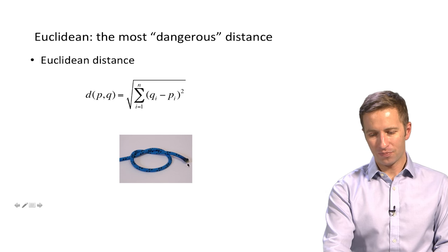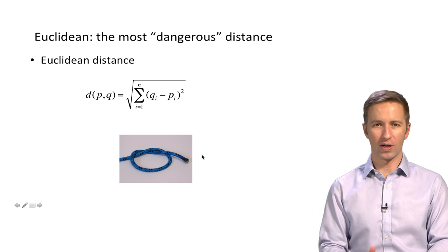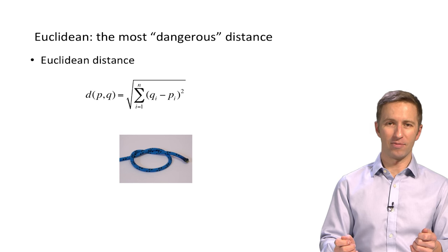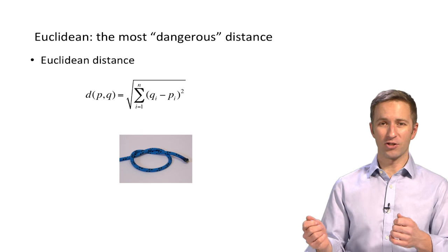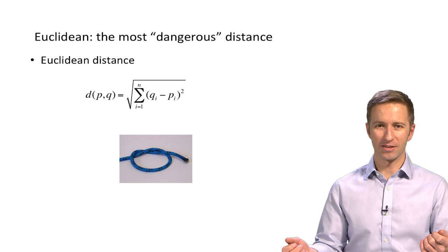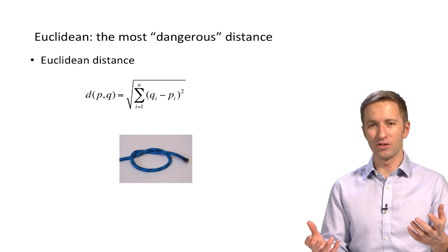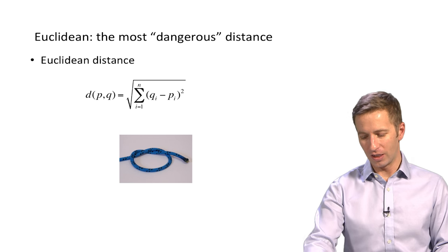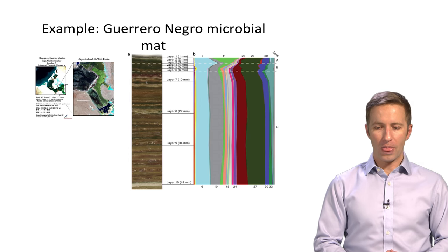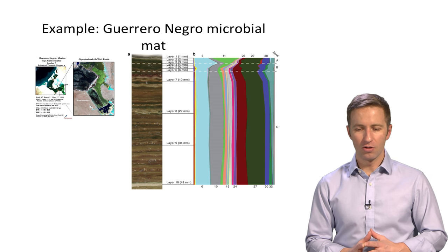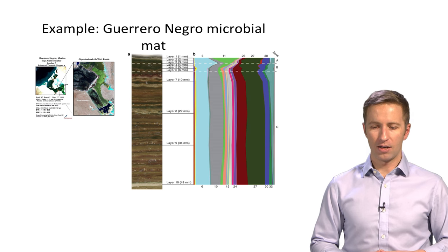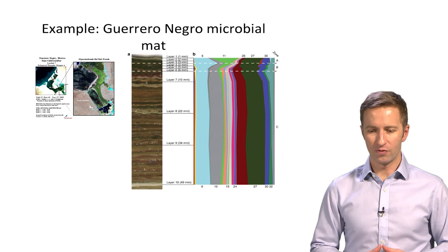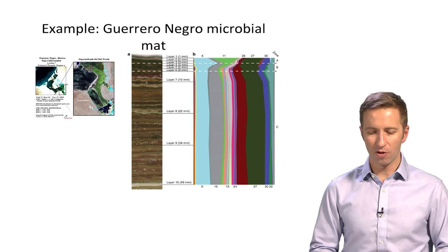but it actually does a really poor job of measuring ecological distances between communities. And I think of it as being analogous to the square knot, or the overhand knot, which is the most dangerous knot in rock climbing, because it's the knot that everybody knows. It's really easy to tie, but it comes undone very easily.